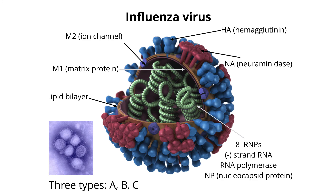Another good example of an inactivated vaccine is influenza virus vaccine. Influenza is an RNA virus with a segmented negative-stranded genome. It's enveloped and has two major glycoproteins — HA and NA — in the envelope. It occurs in three types: A, B, and C. We immunize against types A and B. Only type C seems to cause minor or no illness.